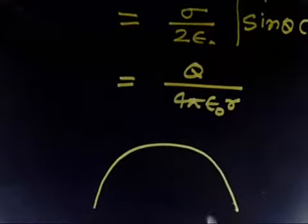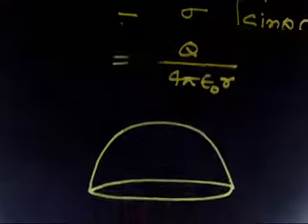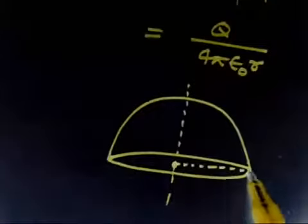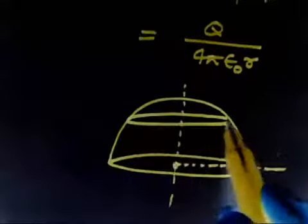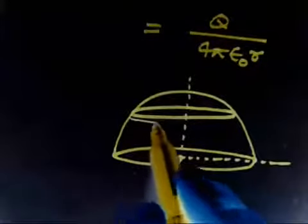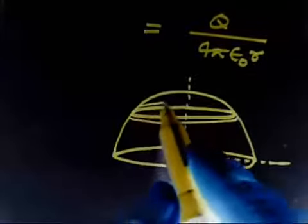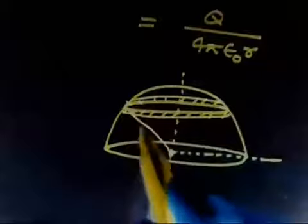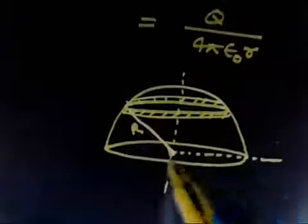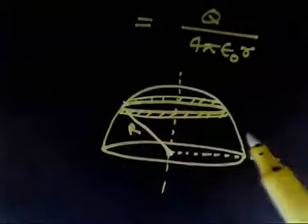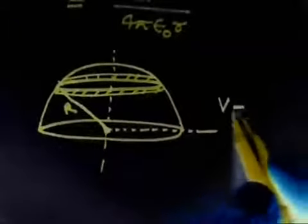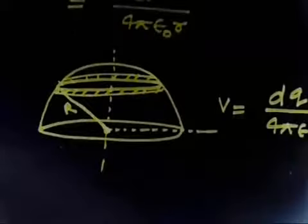Let me describe this again. We have the hemisphere, and our target is to calculate the potential at point O. Consider the same elemental ring. The key point is that all charges on this ring — whether you take this charge or that charge — are situated at a distance R from the center O. So the potential due to this ring is simply dQ over 4 pi epsilon-naught R.